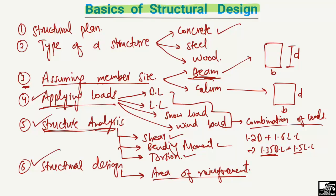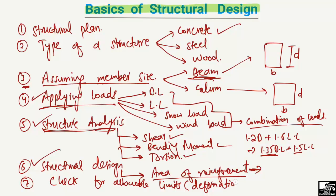The seventh step is checking for allowable limits. After the design is satisfied — for example, the reinforcement area is sufficient for the load — you must check for serviceability. This includes checking deformation or deflection, which must be within allowable limits. If not, you have to repeat the whole process. Different codes provide different deflection limits for beams and columns.